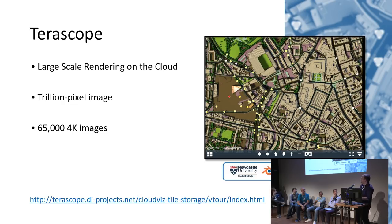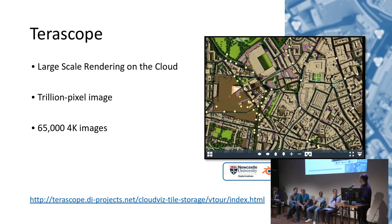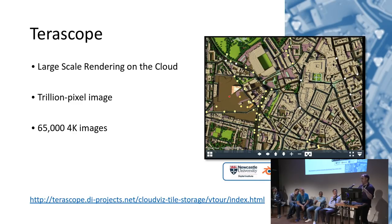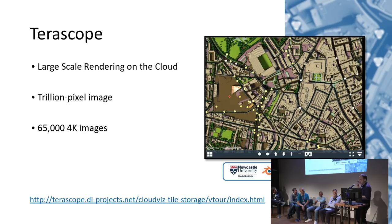We upload it to the cloud — we use Microsoft Azure. The model gets sent to a number of different nodes on the cloud, images get rendered and stitched back together. It's a trillion-pixel image equivalent to 65,000 4K images generated on different nodes. Using 128 nodes it takes about 24 hours; using 1,024 nodes it takes about two hours. It costs about £5,000 every time we want to redraw this image, but compared to buying equivalent hardware in-house it's actually quite a dramatic saving.